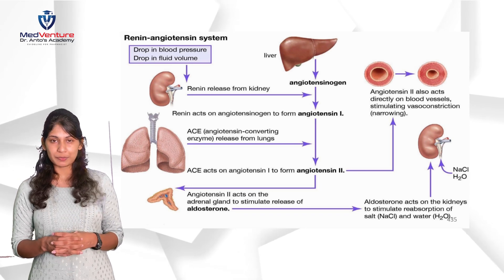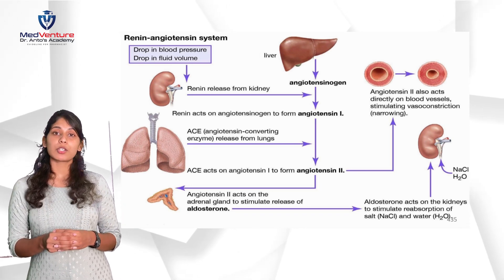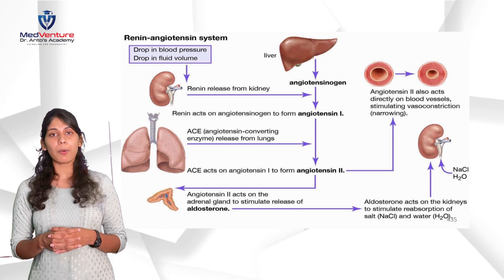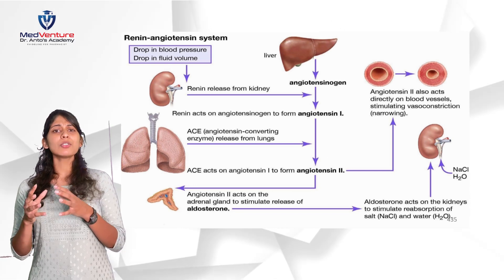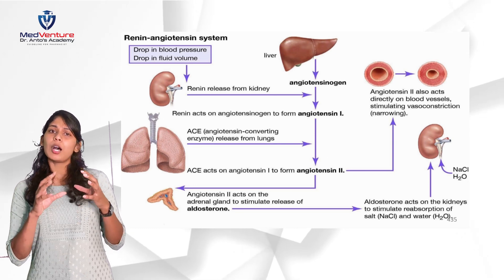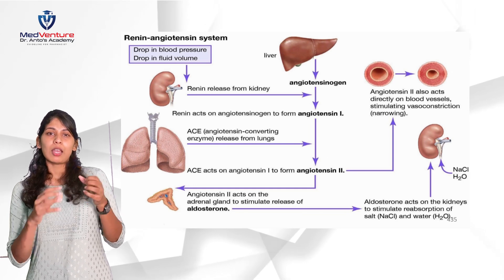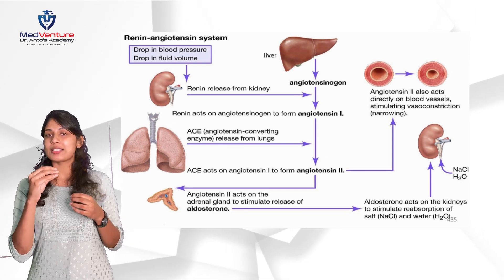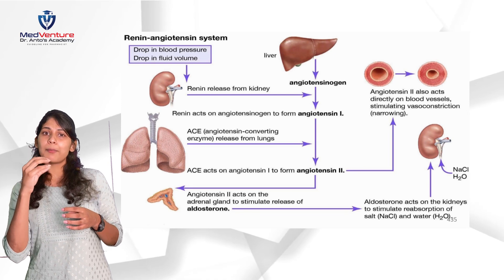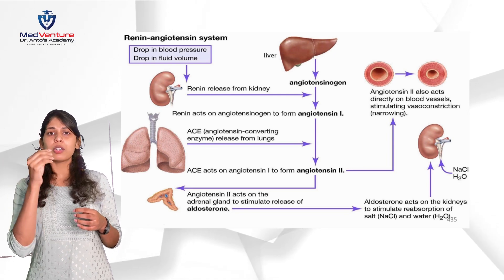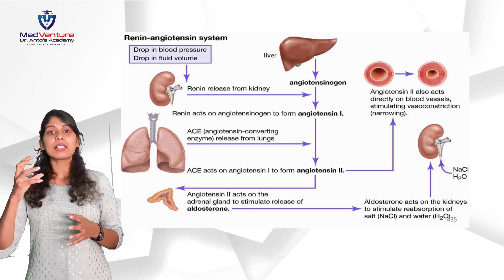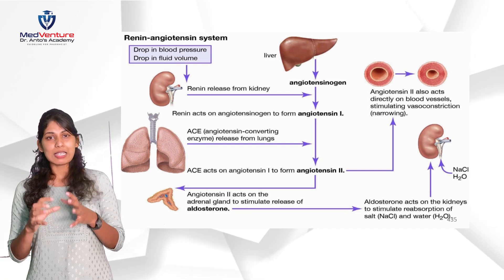Coming back to angiotensin 2: it raises blood pressure by two mechanisms. First, it acts on the blood vessels and causes vasoconstriction. Imagine a pipe — when it is squeezed, water flow is restricted and pressure builds up inside. Similarly, when blood vessels are constricted or narrowed, there is a pressure buildup and blood flow is restricted. This is how angiotensin 2 increases blood pressure through vasoconstriction.